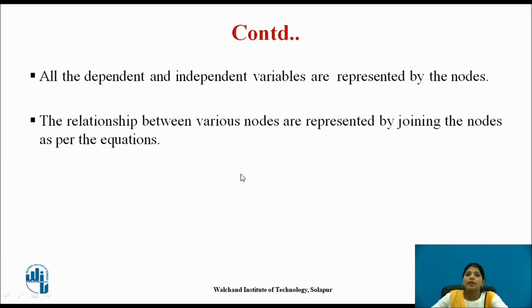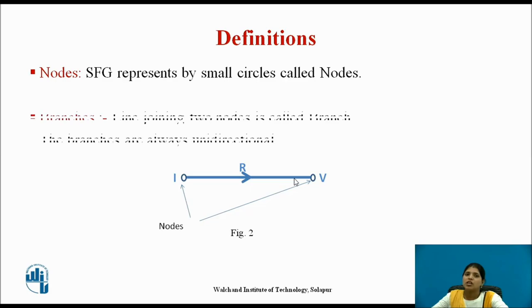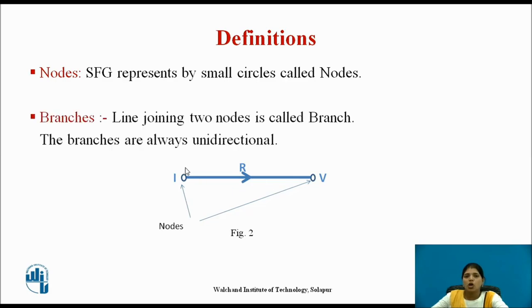All the dependent and independent variables are represented by nodes, and the relationships between nodes are represented by joining the nodes as per the equations. Signal flow graph nodes are represented by small circles — here I and V are the nodes. Branches are nothing but lines joining two nodes, and branches are always unidirectional.